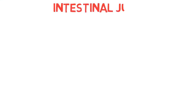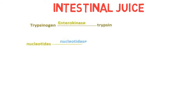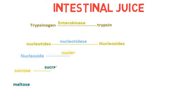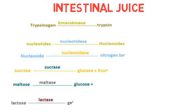Let us move towards succus entericus, that is intestinal juice. Intestinal juice also contains many enzymes. Firstly, let us talk about enterokinase. Enterokinase converts trypsinogen into trypsin. Nucleotides are converted into nucleosides with the help of nucleotidase enzyme.